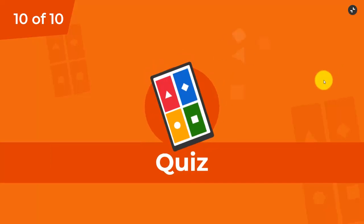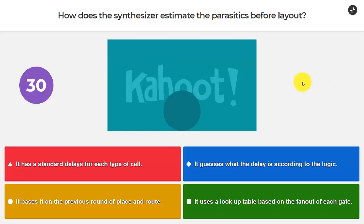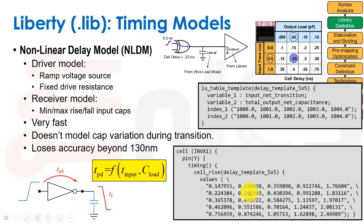And we've reached the last question for this Kahoot. How does the synthesizer estimate the parasitics before layout? Well, this is something that drives me nuts because does it have standard delays for each type of cell? Does it guess what the delay is according to the logic? Does it base it on the previous round of place and route? Or does it use a lookup table based on the fanout of each gate? And we saw that the wire load model uses this one.